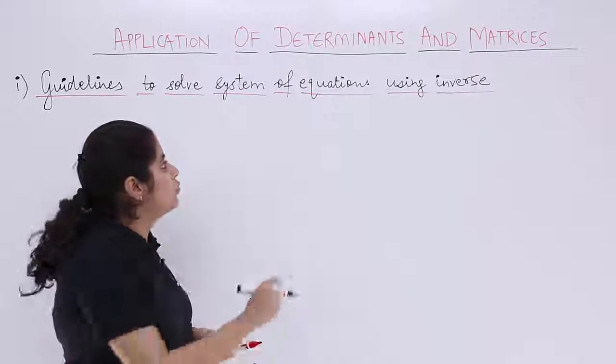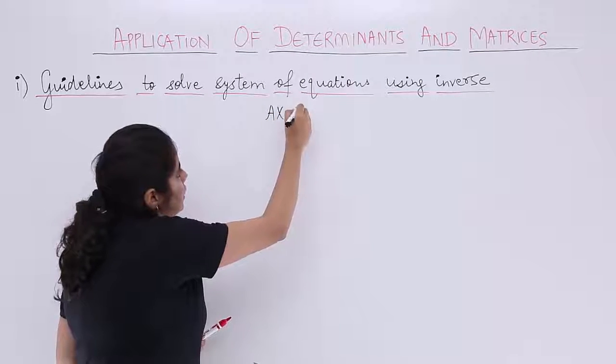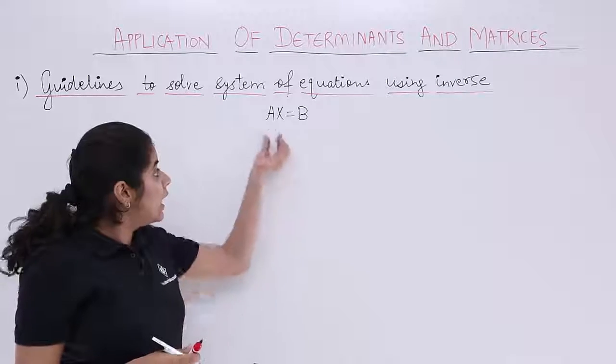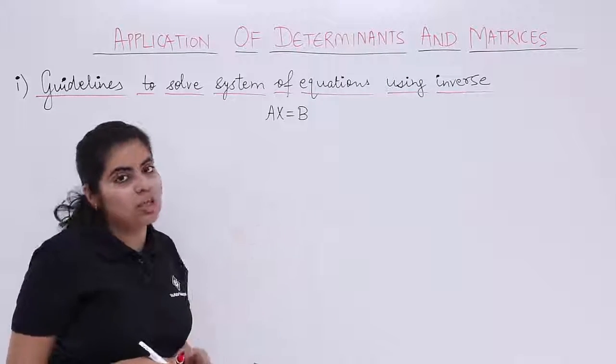The first step would be to express the given system of equations in the form of AX = B as we saw in the previous video. A would be the coefficient matrix, X would be the variable matrix, B would be the constant matrix.